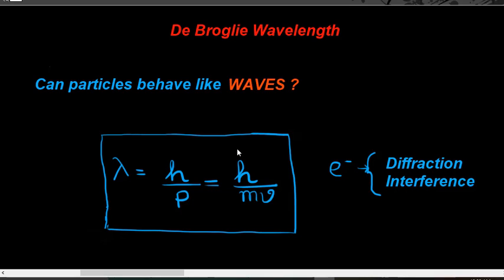We have learned about light in detail, where we found that light, which was considered as a wave, can also behave as a particle. So if we think in reverse, can a particle behave like waves? Can particles also exhibit properties which are exhibited by waves?